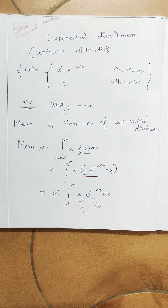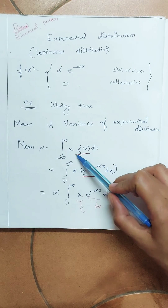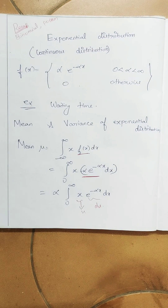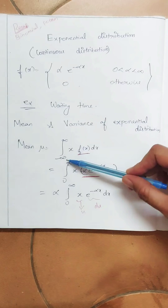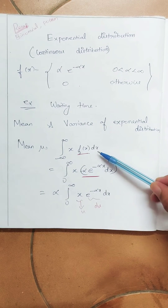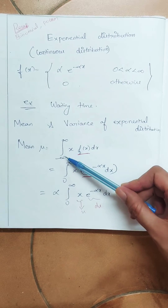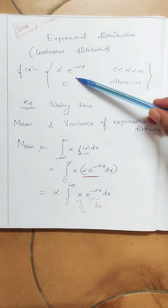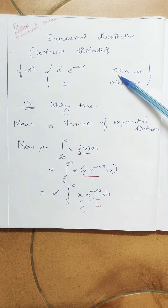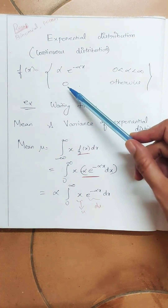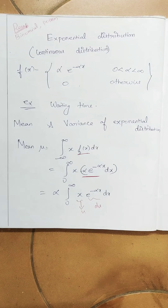We have the derivation for mean and variance for exponential distribution. As I told you, we have already derived that mean is summation x · f(x). In discrete it's a summation; in continuous, how do we add? It's integration. So we write the integral from -∞ to ∞ of x · f(x). Here the function f(x) I have derived is α · e^(-αx), and α varies from 0 to infinity, and it is zero otherwise.